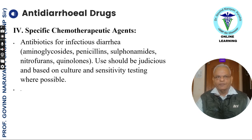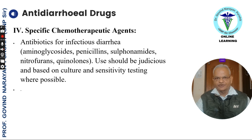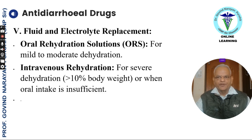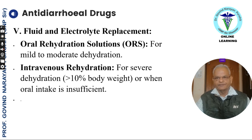Specific chemotherapeutic agents include antibiotics for infectious diarrhea like aminoglycosides, penicillin, sulfonamides, nitrofurans, and quinolones. Their use should be judicious and based on culture and sensitivity testing wherever possible, or they should be the second line of choice. An important consideration in diarrhea is fluid and electrolyte replacement — oral rehydration solutions for mild to moderate dehydration, and intravenous rehydration for severe dehydration or when oral intake is insufficient.